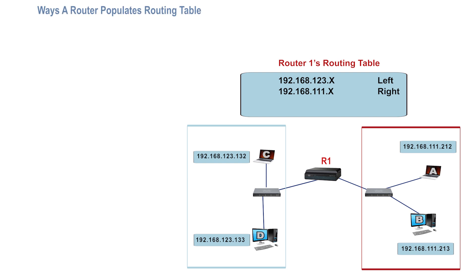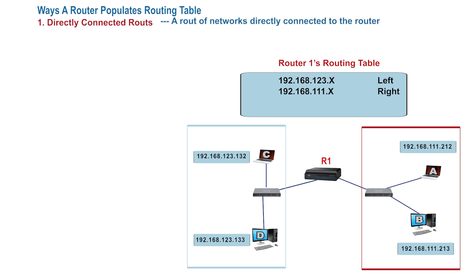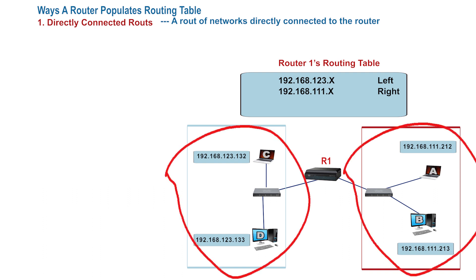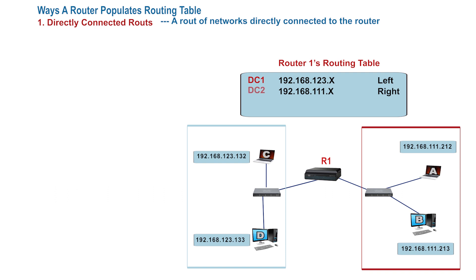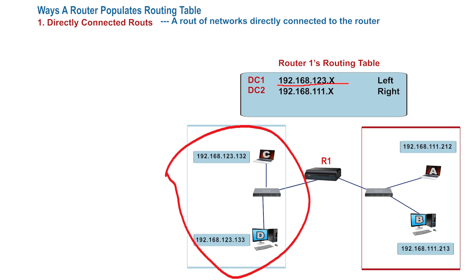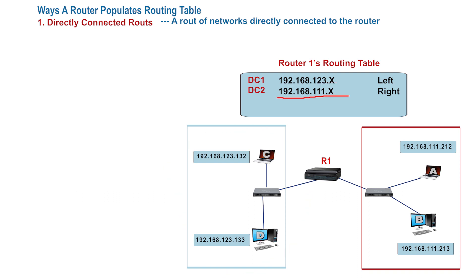Let's look at ways the routing table is populated. First, directly connected routes. This is a route of networks directly connected to the router. In this case, this router is directly connected to these two networks, and therefore has two directly connected routes in its routing table. This route tells the router that the 192.168.123.x network exists at the left interface, and this route tells the router that the 192.168.111.x network exists at the right interface.